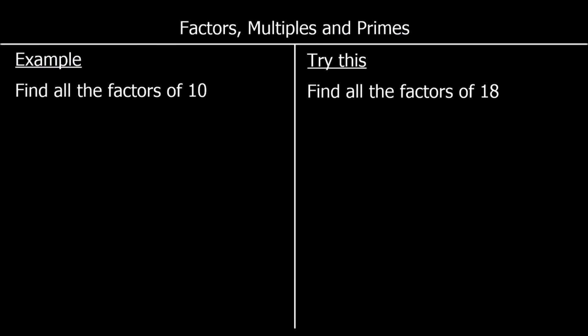We're going to start with factors. Factors are all of the numbers that multiply together to make a number. So the factors of 10 are all of the numbers that multiply together to make 10. To find the factors of 10, we write down the numbers that multiply to make 10. So 10 is 1 times 10, and it's in the 2 times table: 2 times 5. It's not in any other times tables — only 1 times 10 and 2 times 5. So those are all the factors of 10.